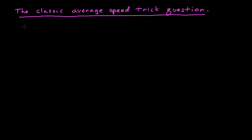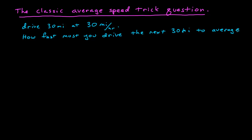And the question is this: let's say you drive 30 miles at 30 miles per hour. How fast must you drive the next 30 miles to average, to have an average speed of 60 miles per hour?